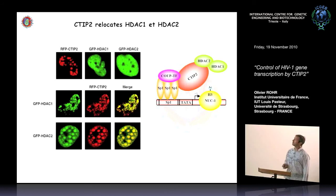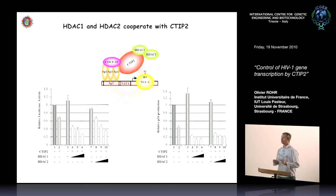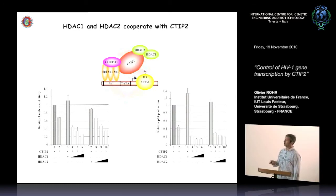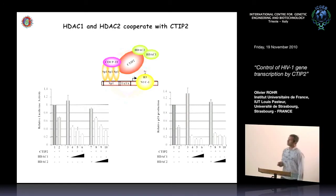Is this interaction functional? To answer this question, we performed luciferase assays with HIV-1 promoter-LUC constructs. We transfected these constructs in the presence of CTIP2 overexpression with concomitant expression of HDAC1 or HDAC2. CTIP2 overexpression reduced the activity of the promoter, and concomitant overexpression of HDAC1 cooperated in the silencing of the promoter. The same results were seen with HDAC2 overexpression.